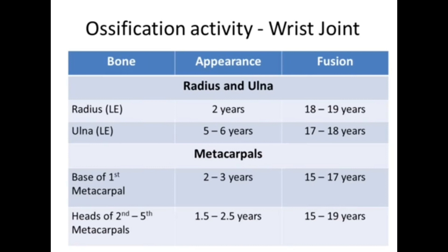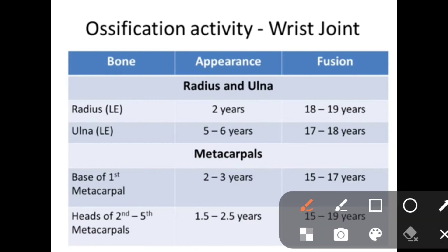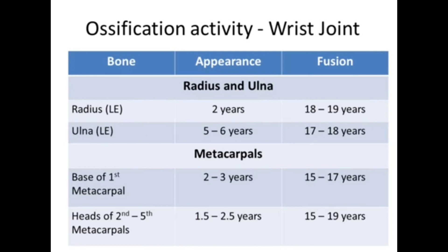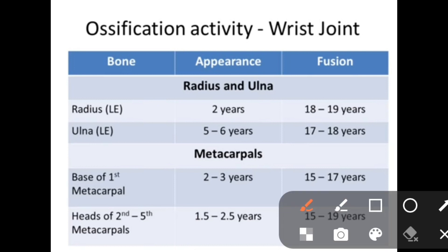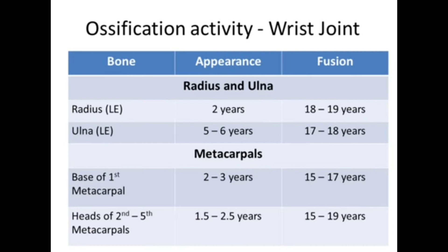Now, ossification activity of the wrist joint — bone appearance and fusion. For the radius: the lower end appears at two years but fuses at 18 to 19 years. Lower end of the ulna appears at five to six years but fuses at 17 to 18 years. Base of the first metacarpal appears at two to three years but fuses at 15 to 17 years. Head of the second to fifth metacarpals appears at 1.5 to 2.5 years and fuses at 15 to 19 years.